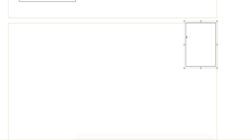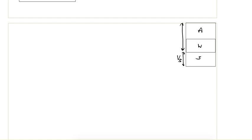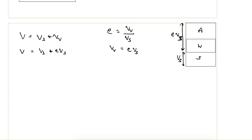Similarly, we can write for volume of solids and total volume. From the definition of void ratio, volume of voids upon volume of solids equals e, so volume of voids equals e times volume of solids (EVs). Total volume equals volume of solids plus EVs, so volume of solids equals total volume divided by (1 + e).